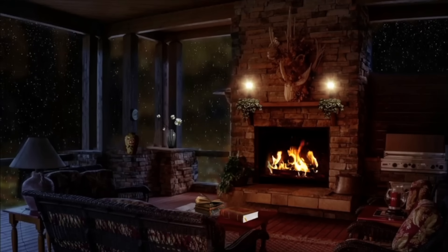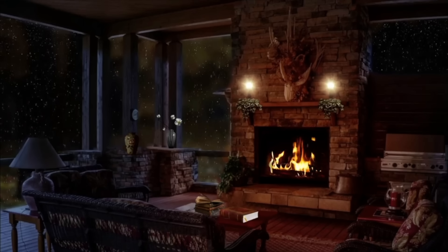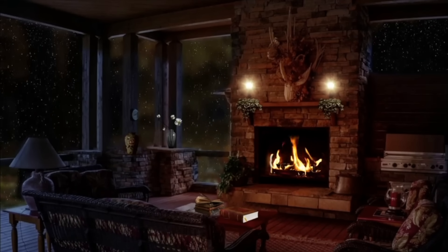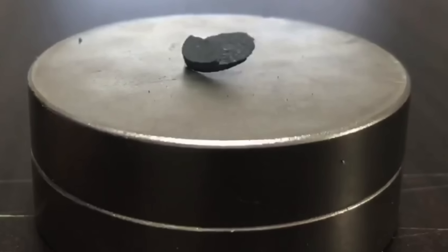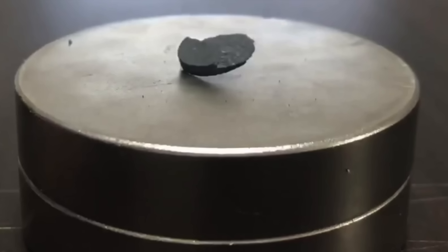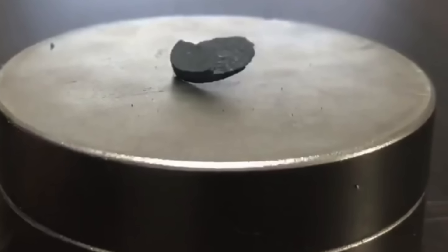LK-99 is a polycrystalline material, basically a mixture of lead, oxygen, and phosphorus that's been infused or doped with copper. The claim is that this material is superconductive at ambient temperature and has zero resistance in most settings.